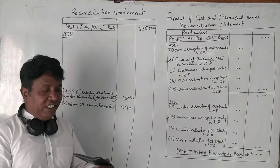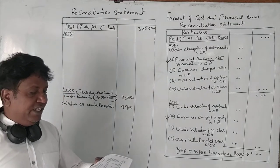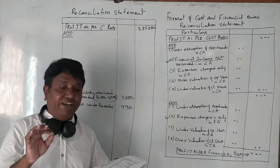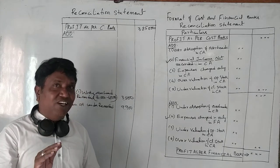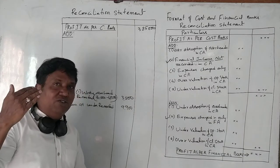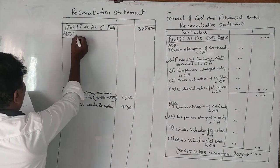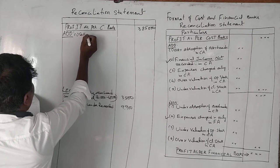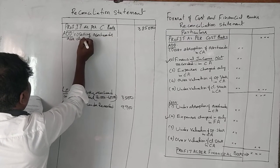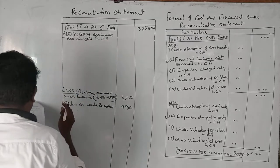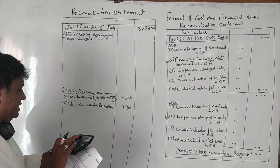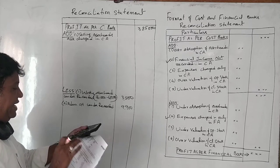Next is selling overheads: recorded as 45,600 in cost books, but in financial books it is only 38,500. In this case, cost accounting overheads are recorded more — over-charged. So selling overheads over-charged in cost accounting: the difference is 45,600 minus 38,500 = 7,100 rupees to be deducted.